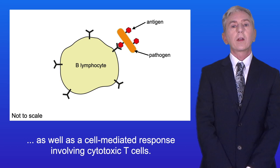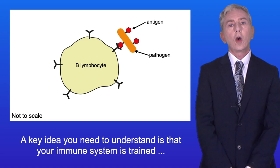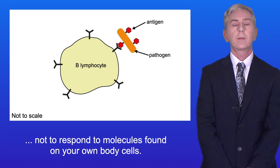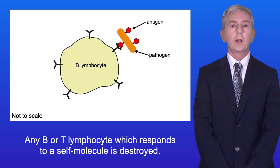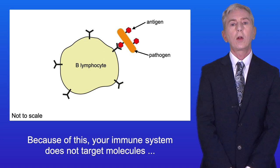A key idea you need to understand is that your immune system is trained not to respond to molecules found on your own body cells. When B and T lymphocytes mature, they are tested against self molecules. Any B or T lymphocyte which responds to a self molecule is destroyed. Because of this, your immune system does not target molecules which are normally found as part of your body.